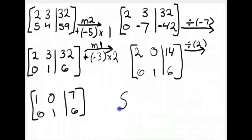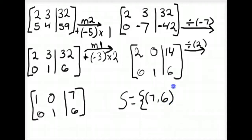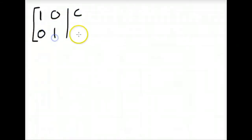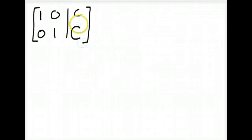The solution to this system of equations is the ordered pair x equals 7, y equals 6. The purpose of solving using augmented matrices is to list the coefficients in a regular form, then manipulate the matrix to get it into the form 1x plus 0y equals some constant c, and 0x plus 1y equals some different constant C. Getting the matrix into this form is essentially solving for x and y.